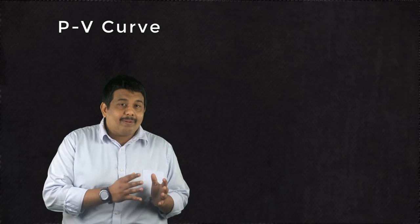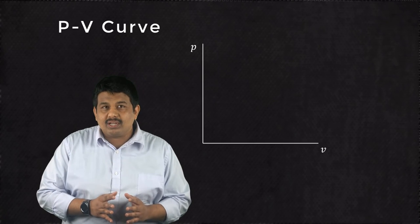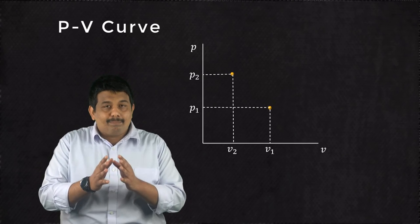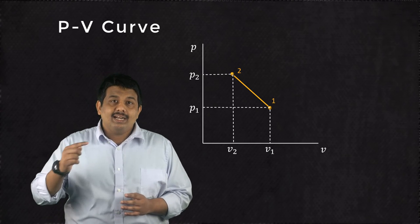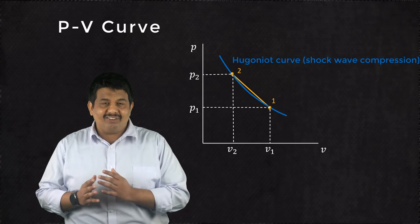When plotted on the pressure volume chart, the Rankine Hugoniot curve represents the locus of all possible pressure volume conditions downstream of the normal shock for one specific set of P1 and V1.